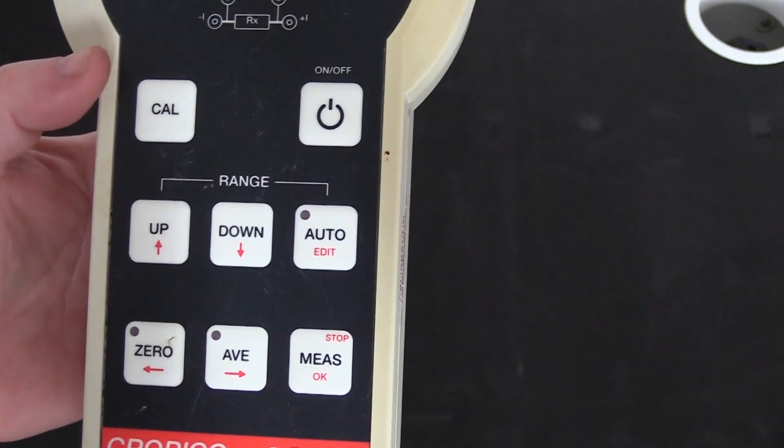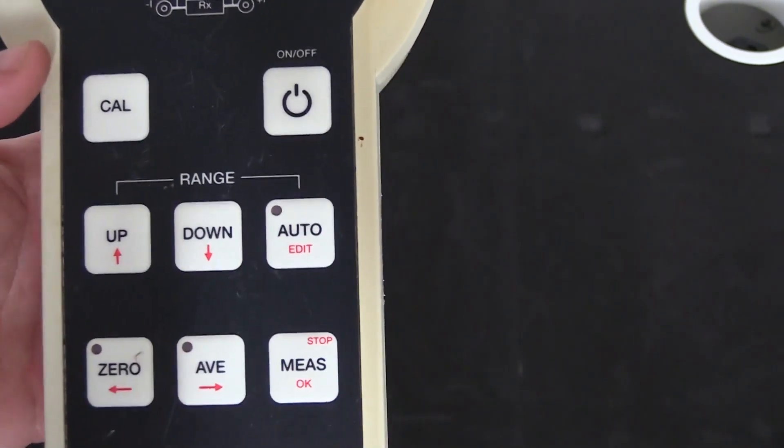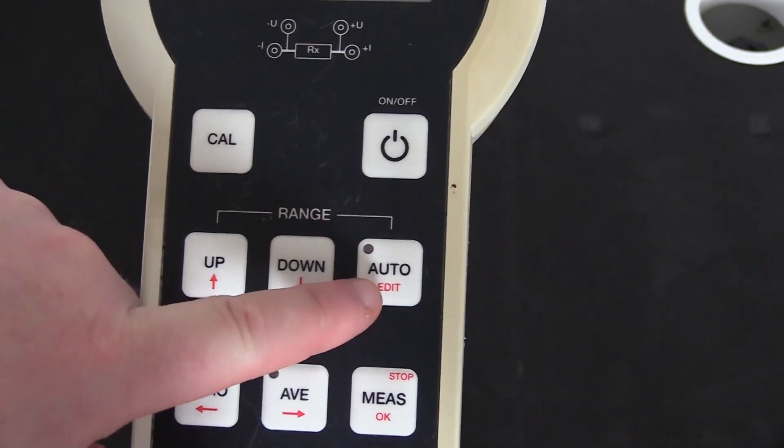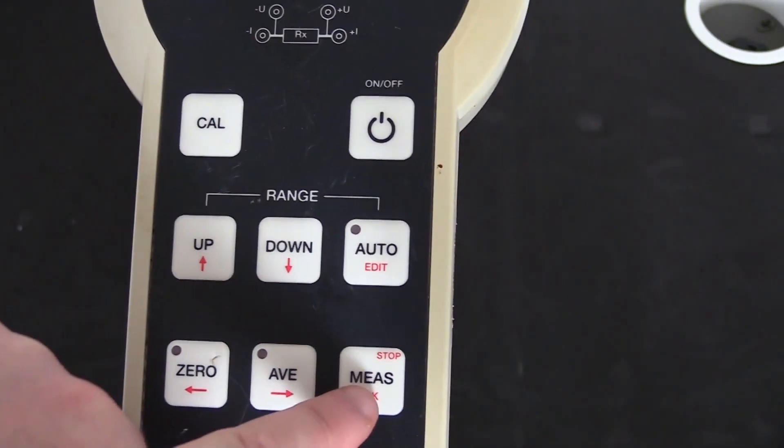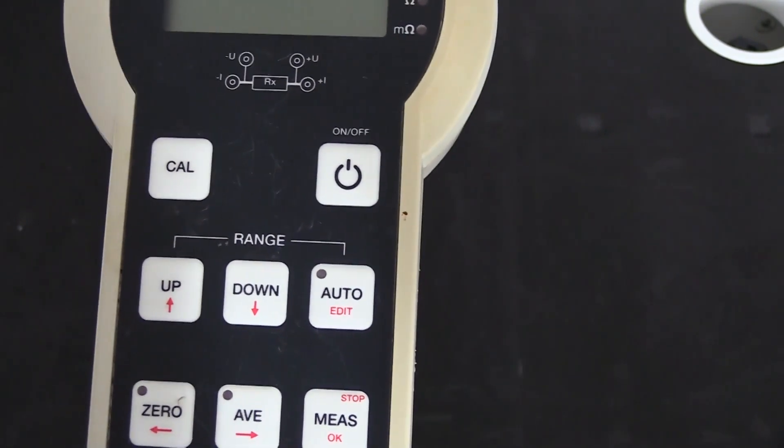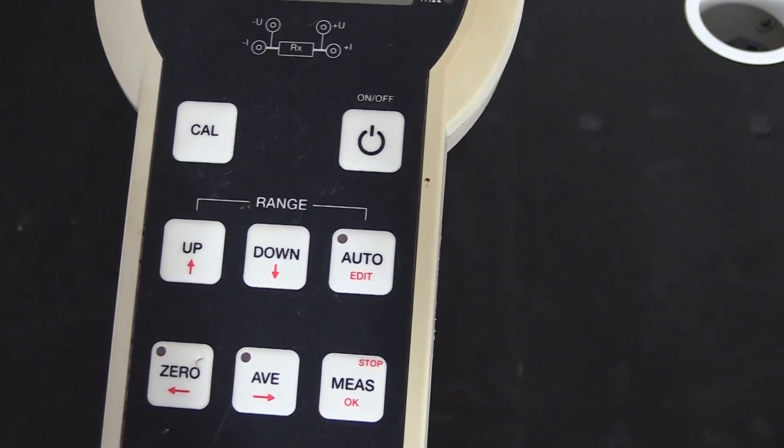In terms of operation, for most people the operation is very simple. We simply turn the unit on, press the auto range function, and then hit the measurement and we'll get an instant reading of the resistance. However, it can be more manually controlled if needs be.